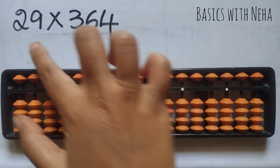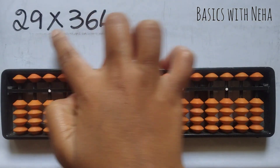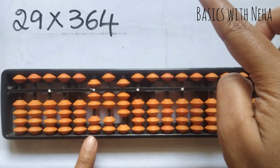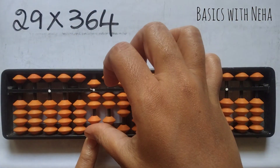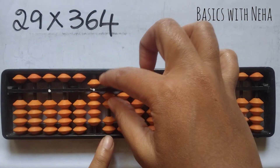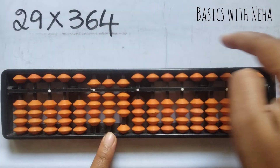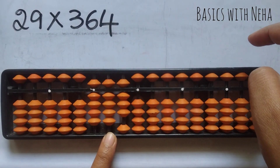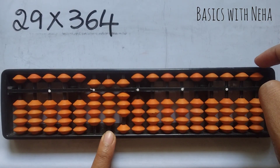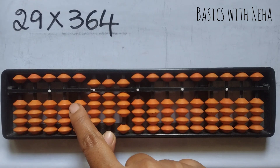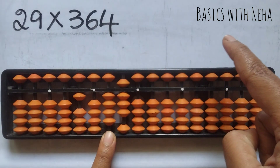Now we are done with 2 into 364. Now we have to do 9 into 364, which is 4 numbers. Start from the 4th rod. 9 threes are 27. Then 9 sixes are 54. So we have to place 5 here. To place 5, it is plus 10 minus 5. Plus 10, we cannot do it here, so plus 10 minus 5 and remove everything from the jumped rod.